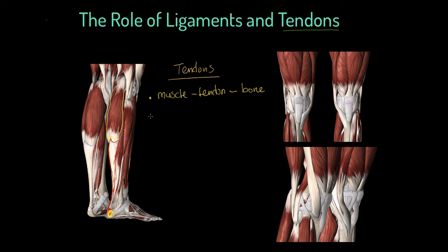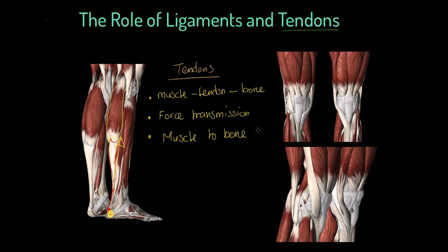If you consider why that is the case, the tendon is responsible for what we refer to as force transmission. We know from the contractile proteins of muscle tissue that when this muscle contracts isotonically and concentrically, it shortens and pulls up on this tendon. That transmits a force from the muscle via the tendon onto the heel — the calcaneus — transmitting force from the muscular system to the skeletal system. The heel would be pulled, and the impact of that would be the toes pointing down — we could call that plantar flexion.